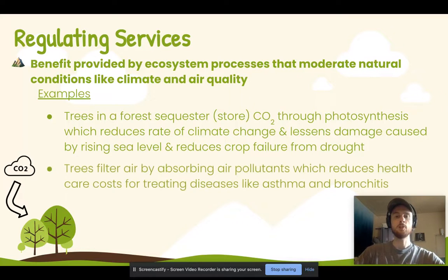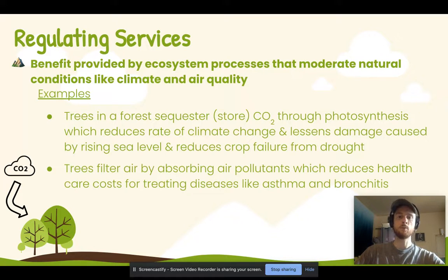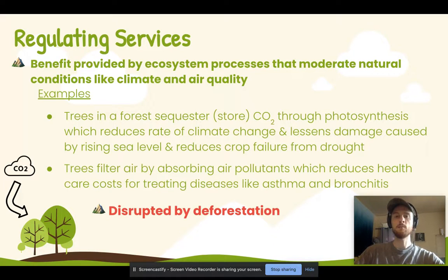A second example is trees regulating air quality. Trees can trap different air pollutants in their leaves, increasing air quality and decreasing the amount we pay for healthcare related to respiratory diseases like asthma or bronchitis. These ecosystem services are disrupted mainly through deforestation — whether for logging to build with wood, clearing land for agriculture, or urbanization — all of which decrease the regulating services we get from intact forest ecosystems.